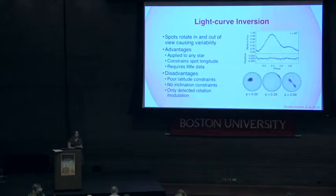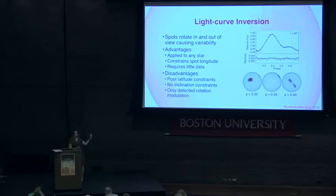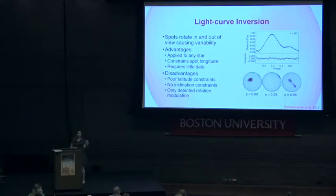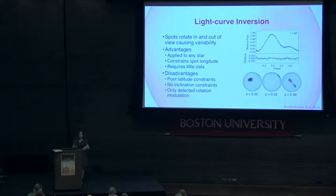I'm going to do a brief overview of the different imaging techniques. The first one is light curve inversion, where you simply have a light curve and recreate a surface that would make that light curve. This is great for showing rotational modulation and locating where the spots are in longitude, but it suffers from degeneracies when trying to locate the spots in latitude, and requires many input parameters like photosphere temperature, spot temperature, inclination, and limb darkening coefficients.